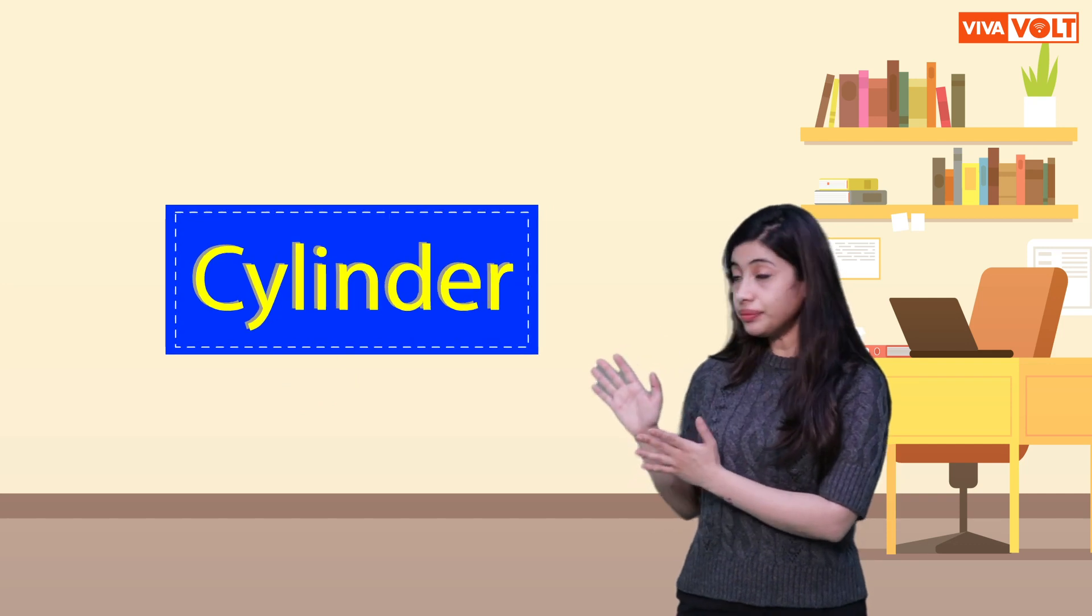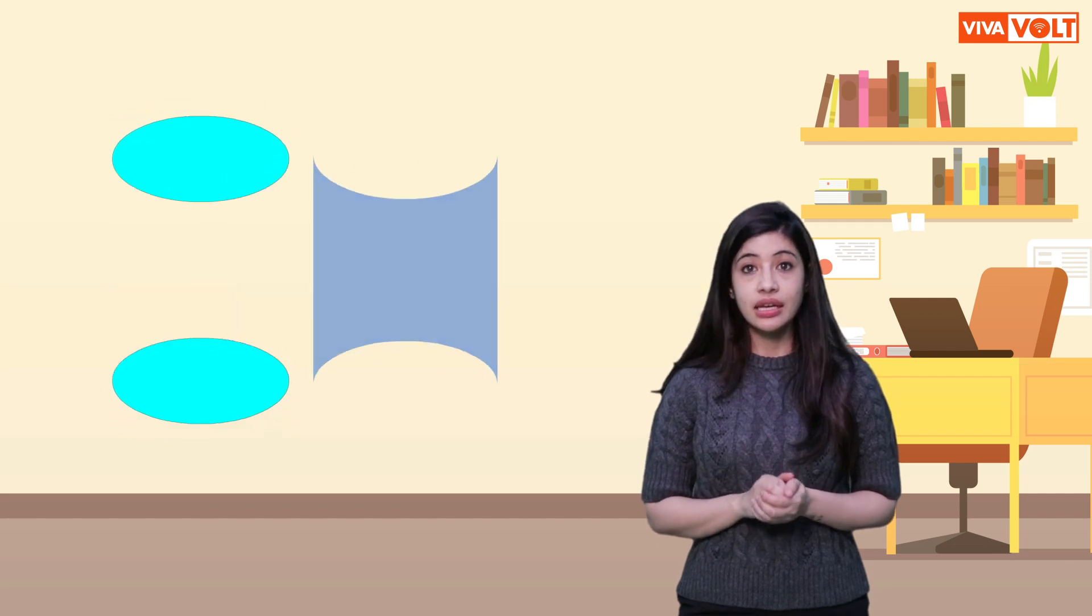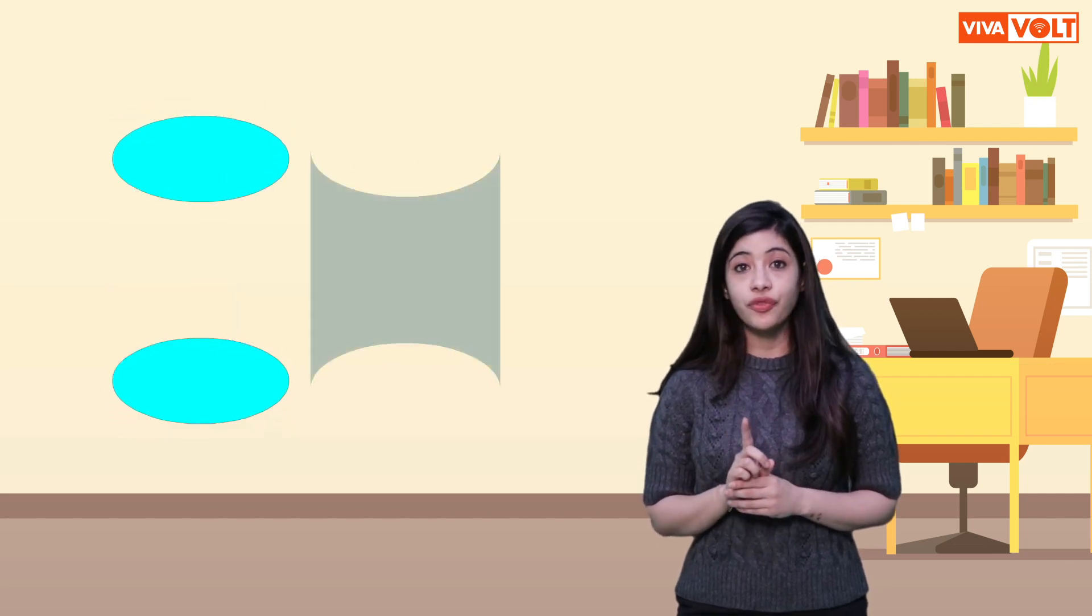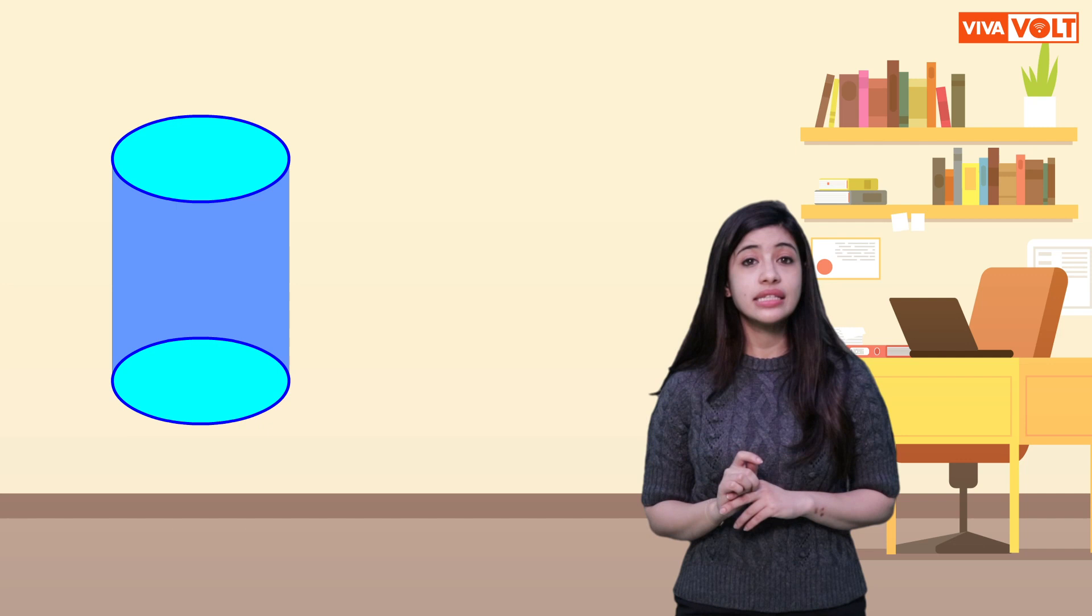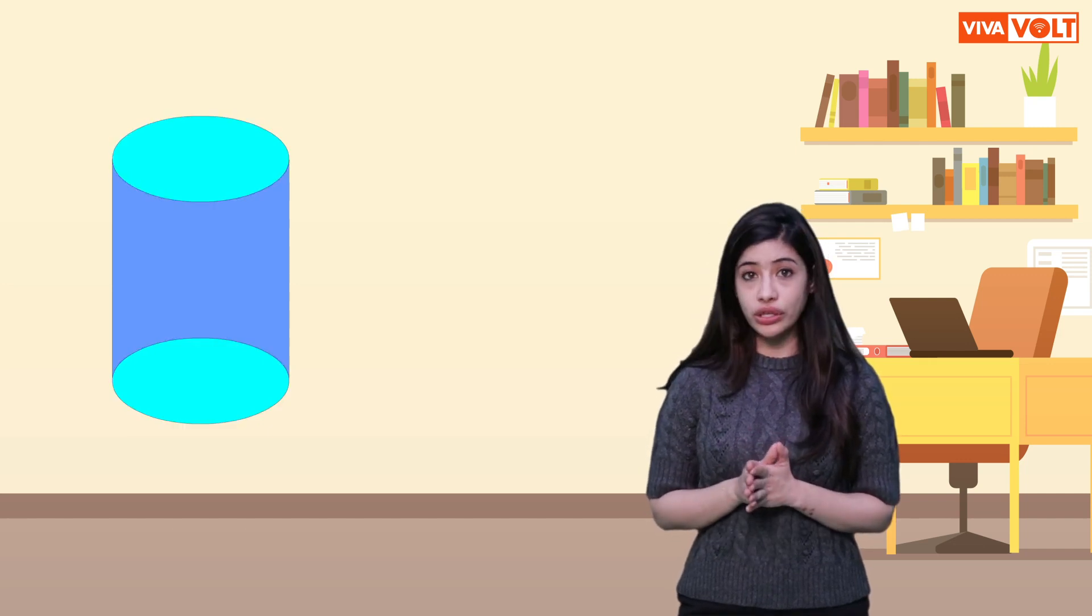Cylinder. A cylinder has two circular flat faces. It has one curved face. It has two edges and it has no corners.